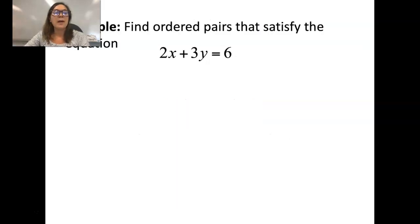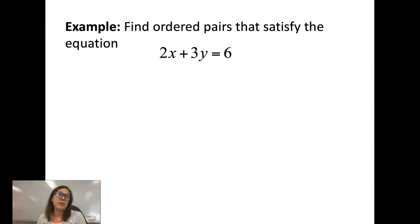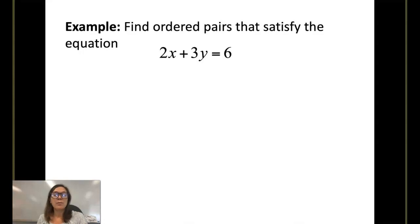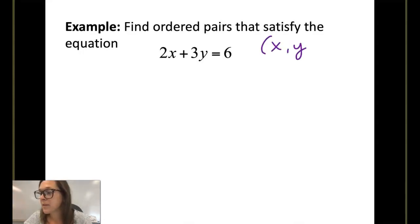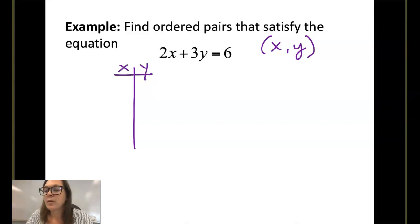So now what we're going to be asked to do is find ordered pairs that would satisfy a given equation. Here we have the equation 2x plus 3y equals 6. Remember, your ordered pair is of the form x comma y. I like to organize my information into an xy table.